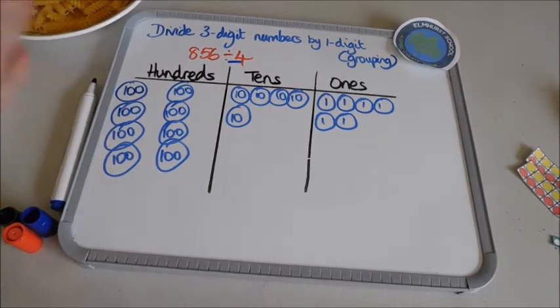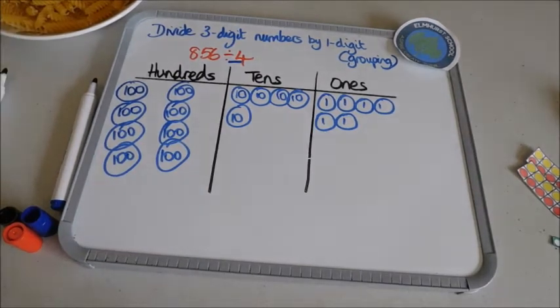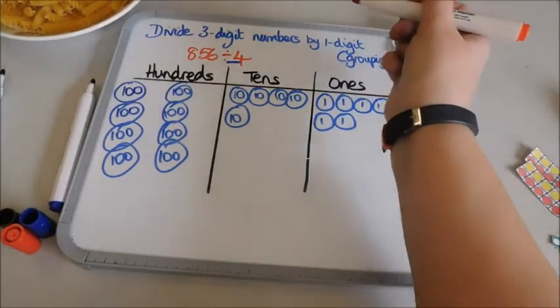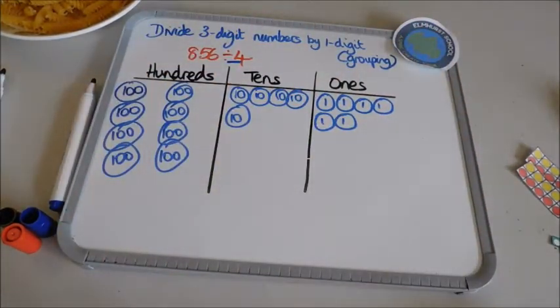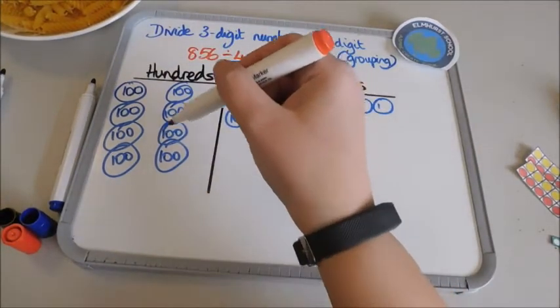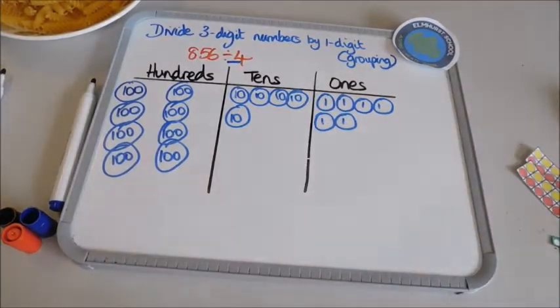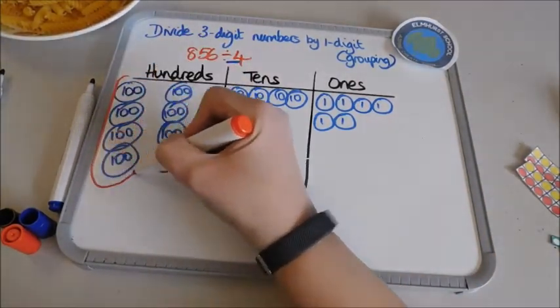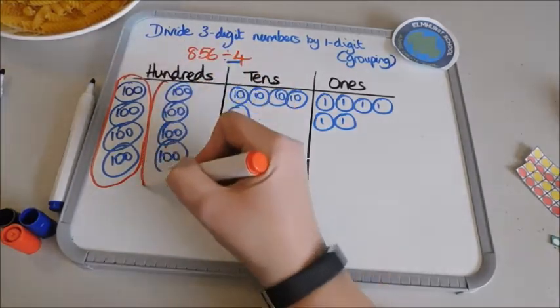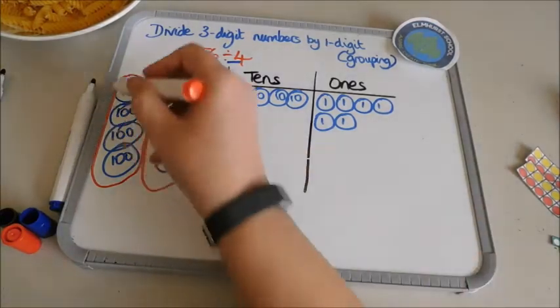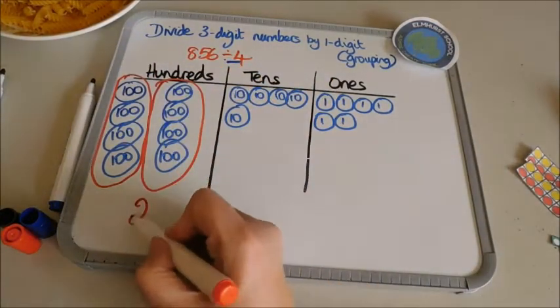When we're dividing we always start with the largest number, because then if need be we can exchange because we want to make sure we are doing our groups equally. So I've got my hundreds here. I want to see my groups of four. So there's one group and there's another group. So how many groups have I got altogether there? I've got one group of four, two groups of four. So two.